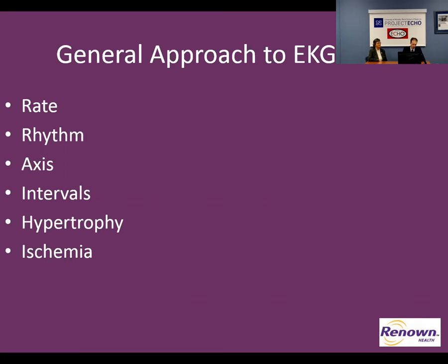I wanted to preface with a reminder about my EKG algorithm. There are various algorithms you can use, but you should use some algorithm to make sure you're not missing anything. My algorithm is: rate, rhythm, axis — QRS axis, though there are other axes to consider — intervals: PR, QRS, QT, and chamber hypertrophy: left atrium, right atrium, right ventricle, left ventricle, and then ischemia last.